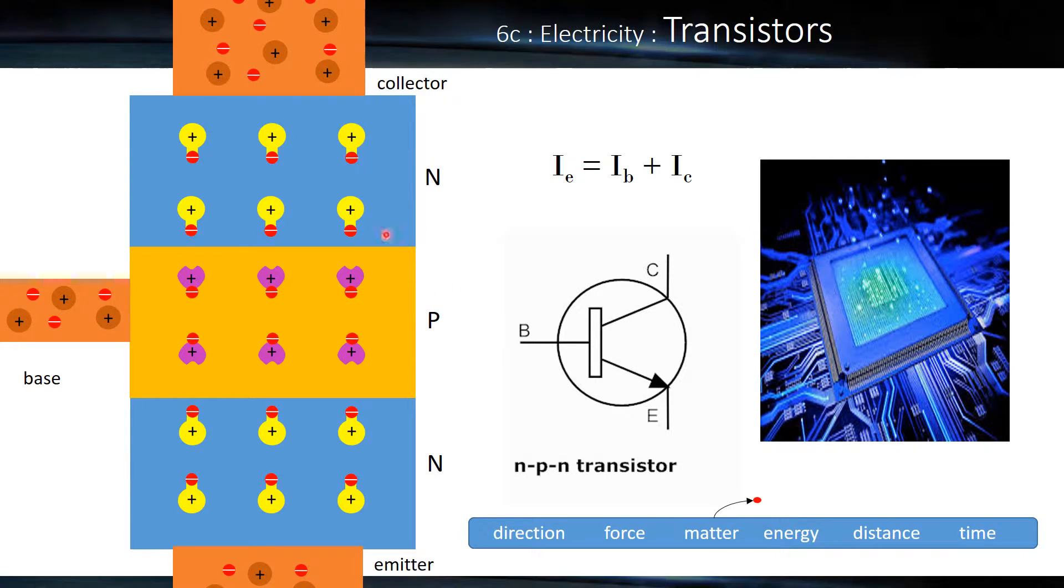The N sections very easily lose one electron and the P section is very happy to gain one. We call this a hole, so it's very happy to naturally gain an electron.